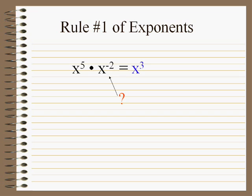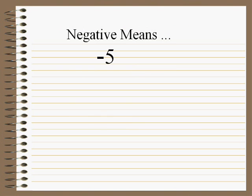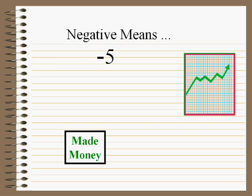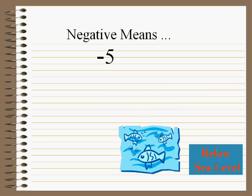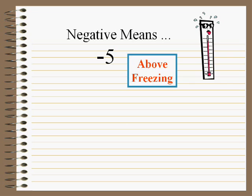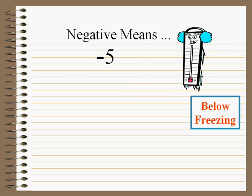So what does this negative exponent mean? Whatever it is, when we multiply it by x to the fifth, we get x to the third. Let's back up and think about the word negative and the symbol negative. That symbol can be thought of as 'opposite.' When do we use negatives? Not when you made money — when you did the opposite, when you lost money. We don't use it when we talk about above sea level; we talk about the opposite, below sea level.